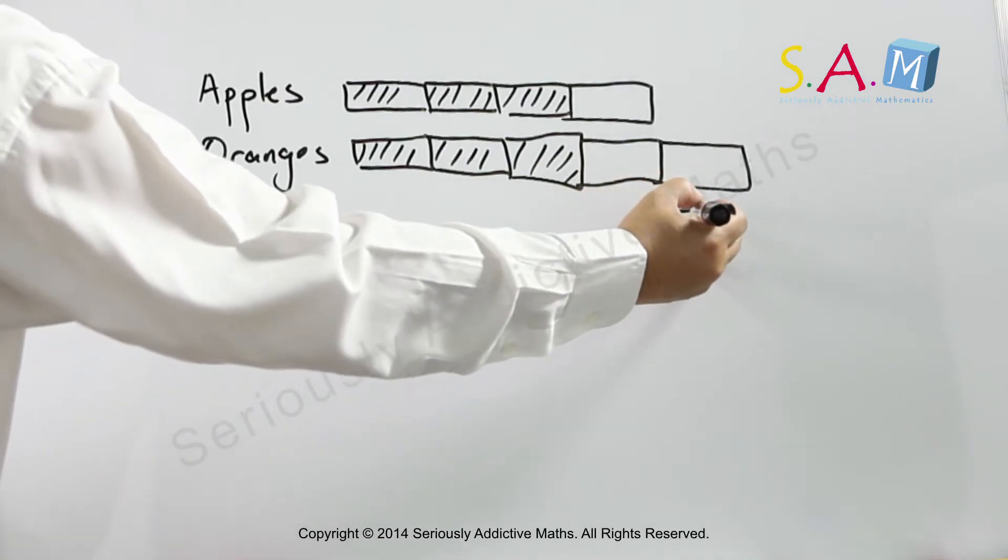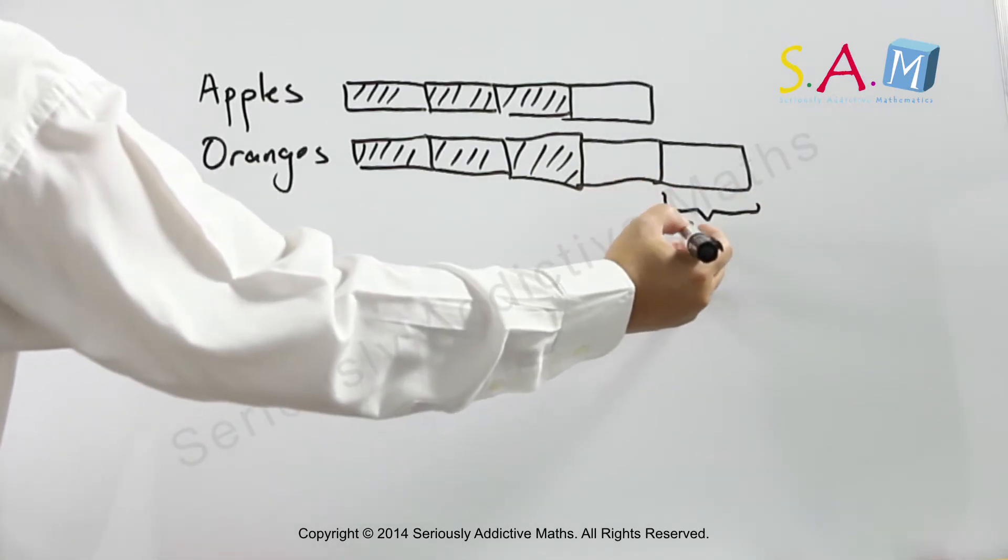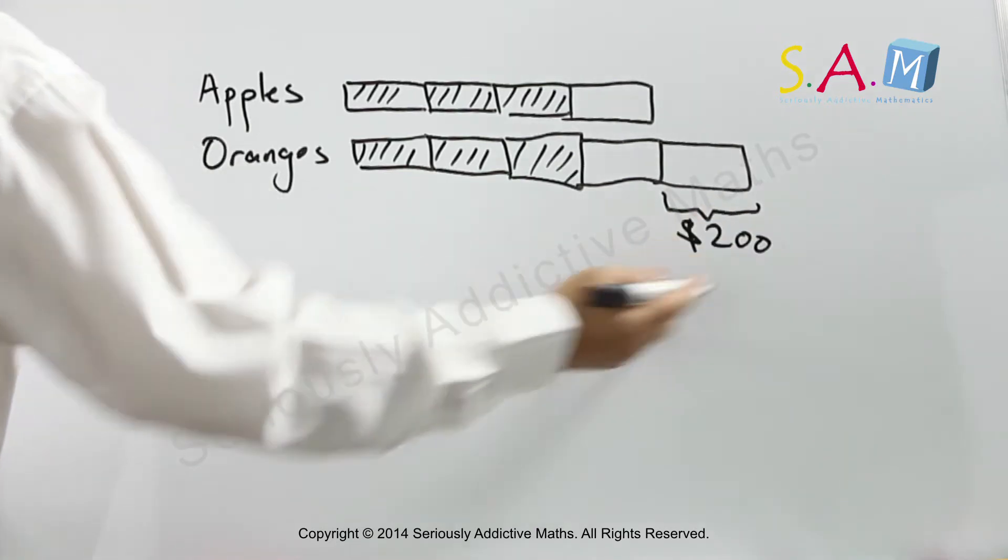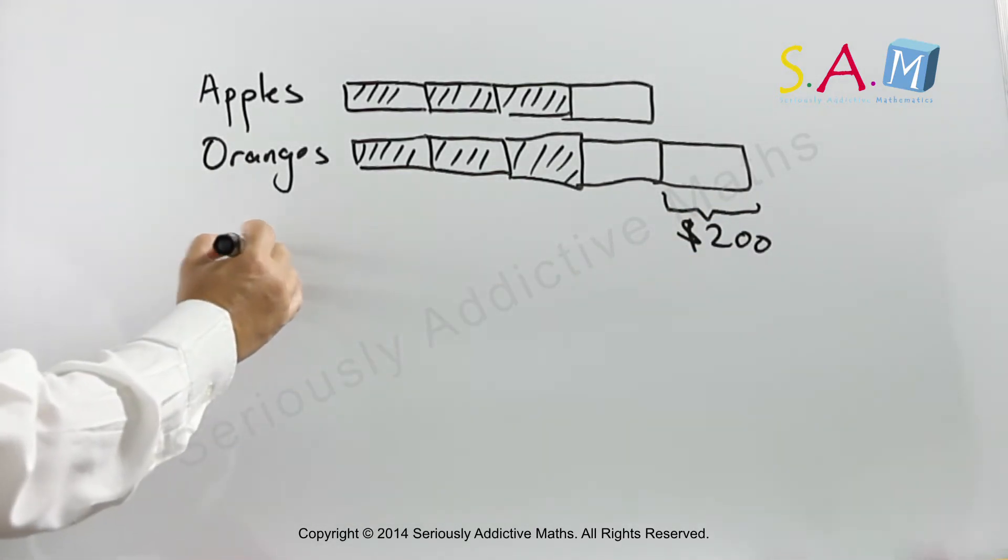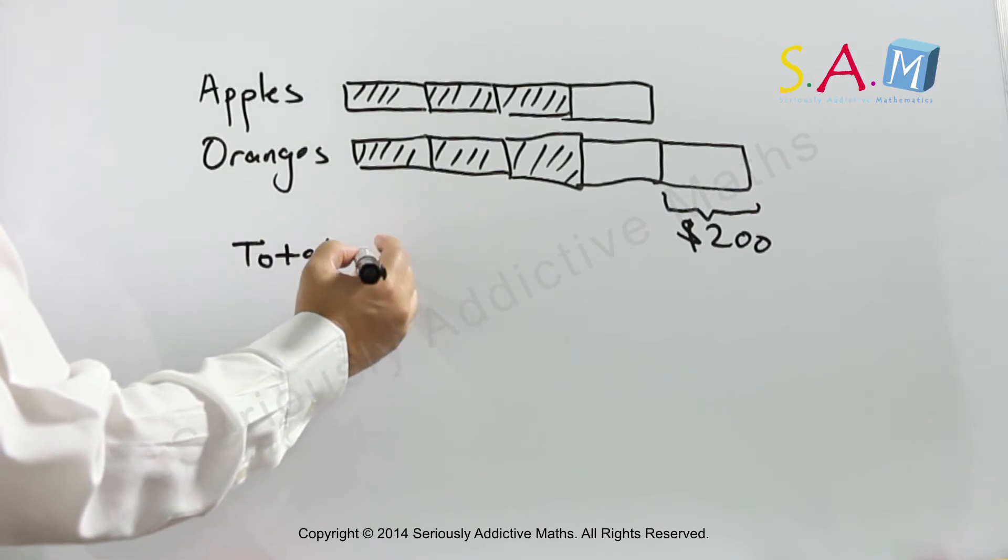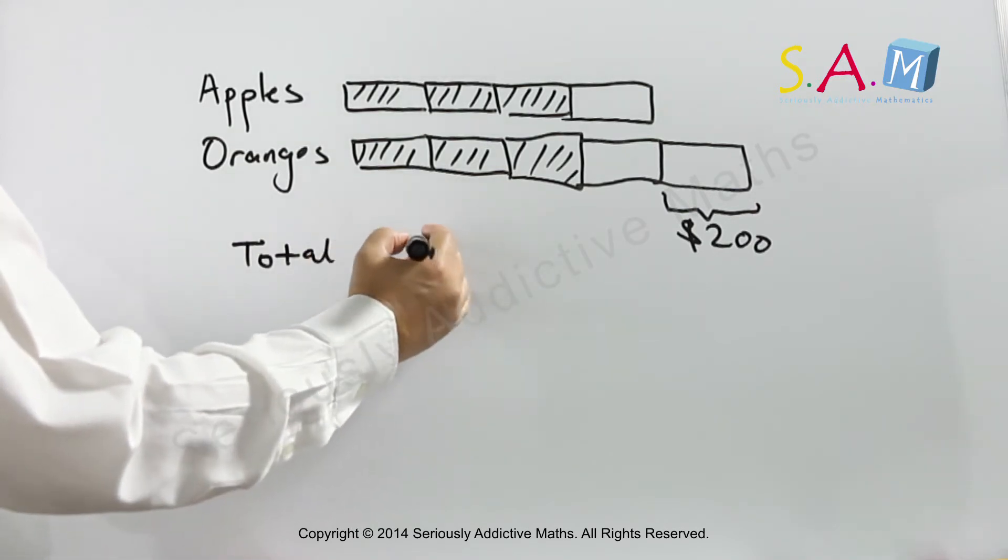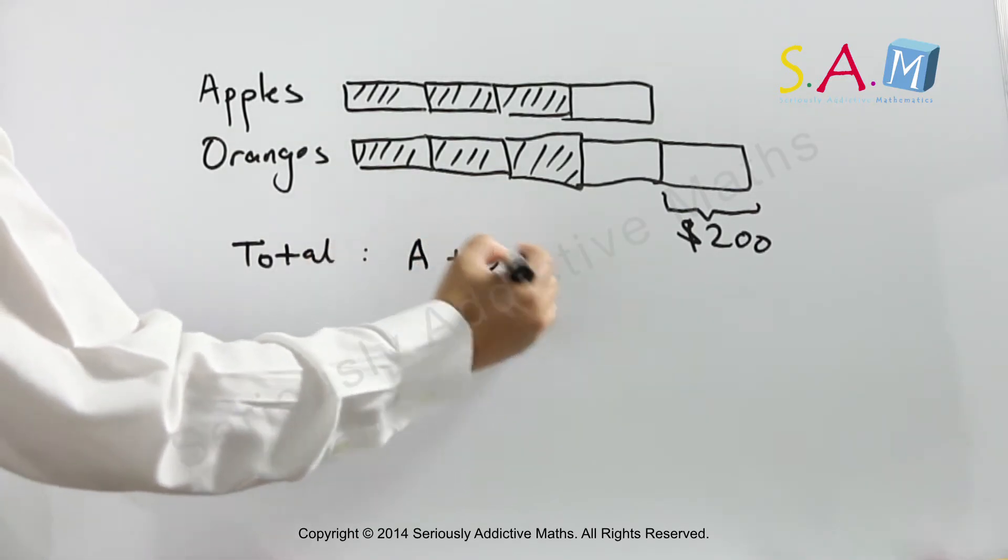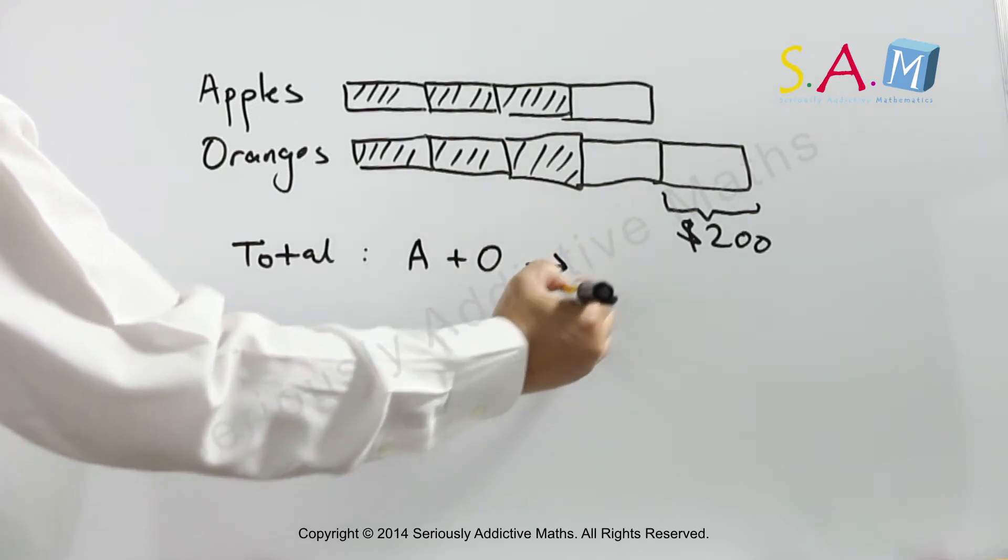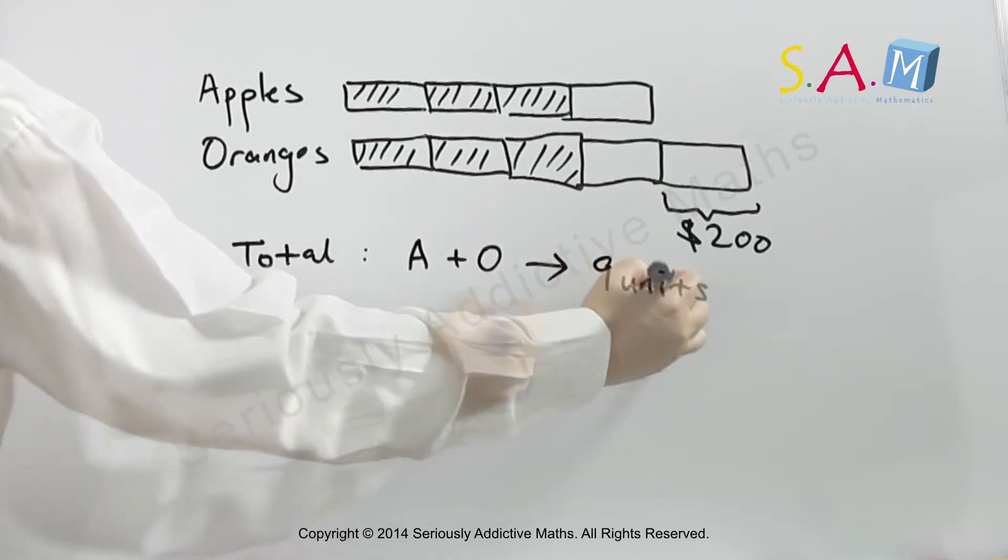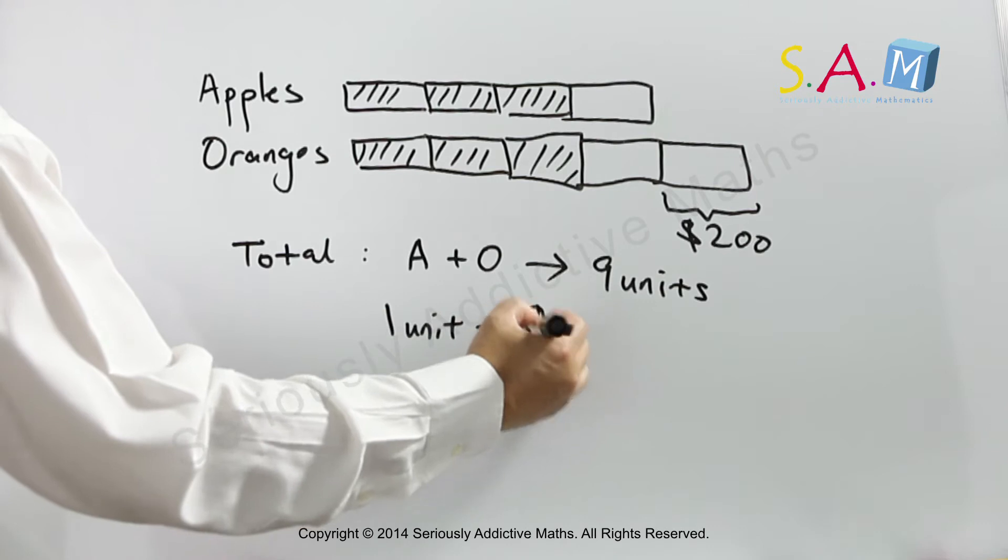$200 more oranges sold than apples. We are told to find the total number of apples and oranges sold. It would be nine units, and one unit is $200.